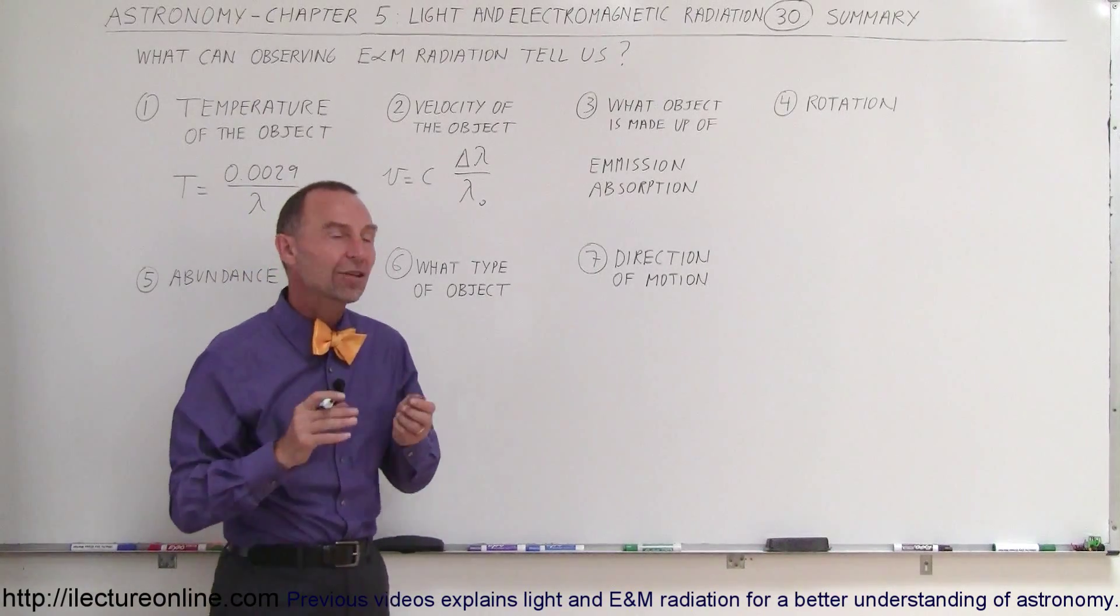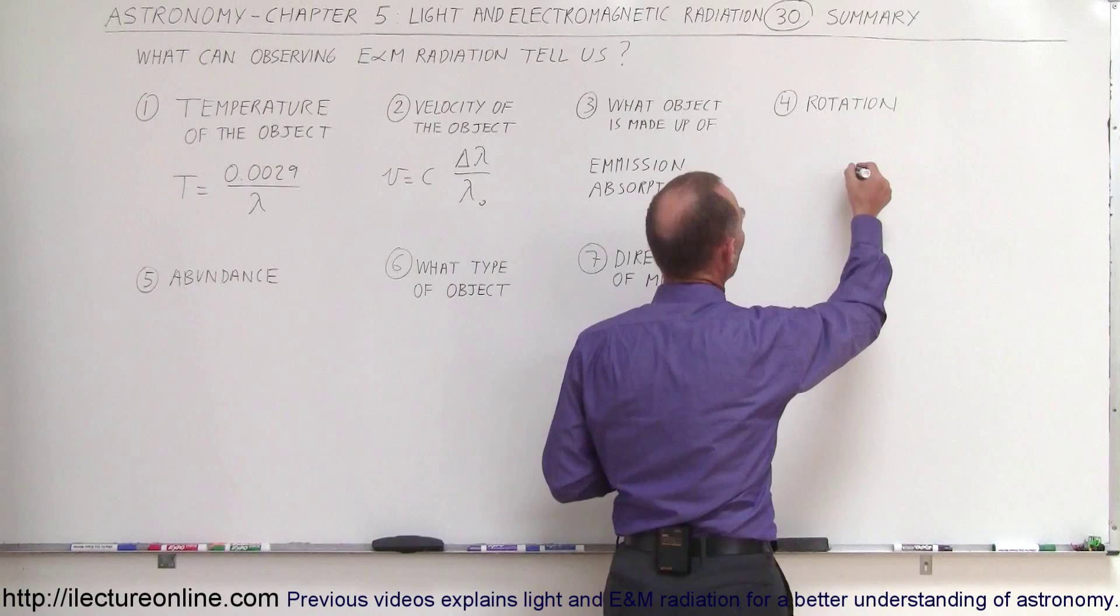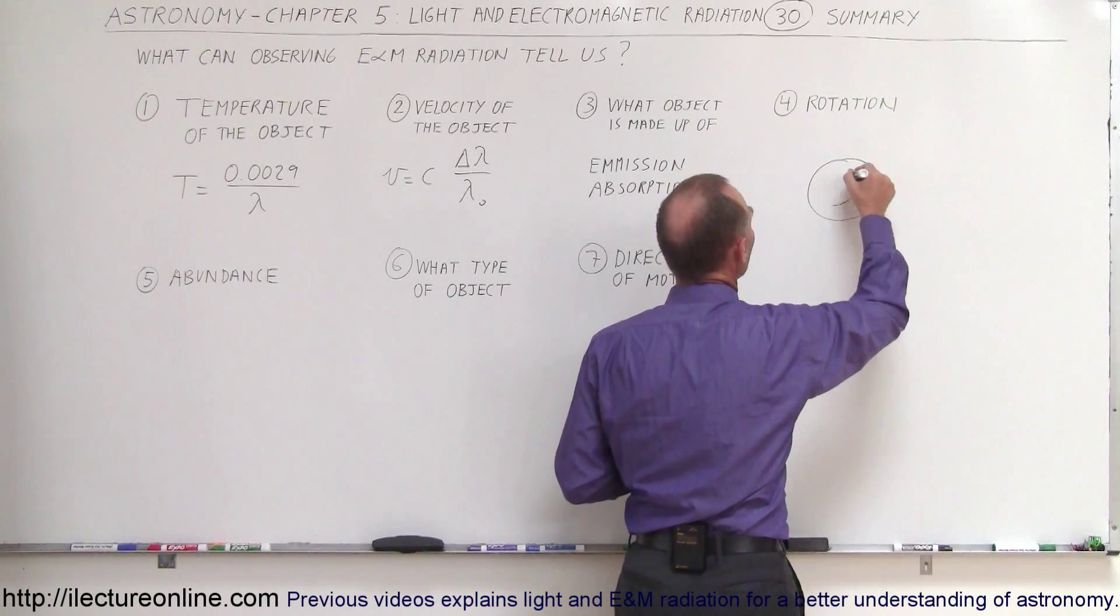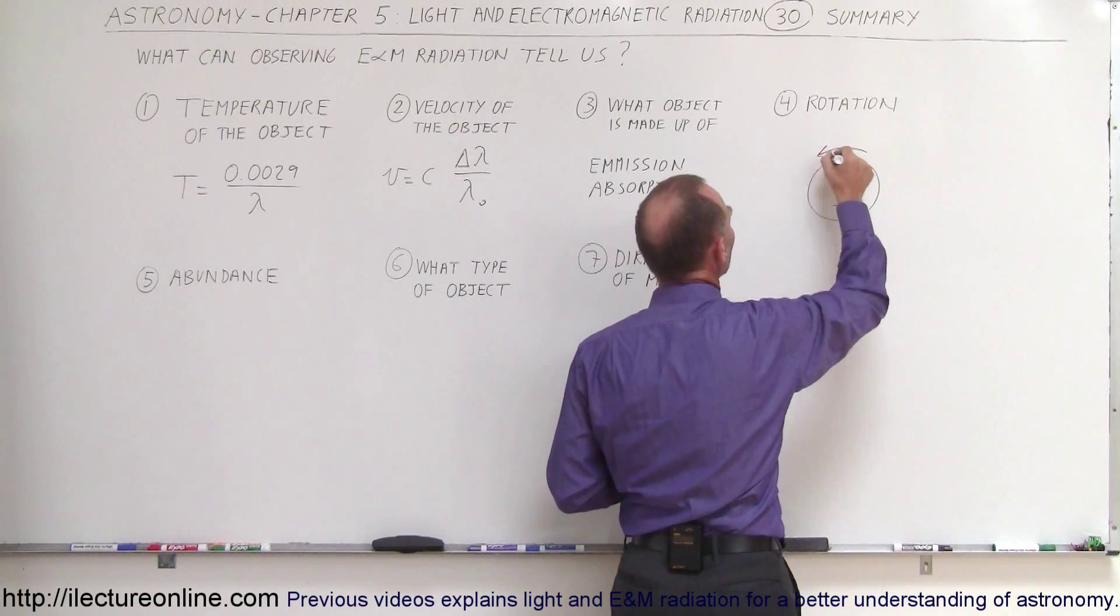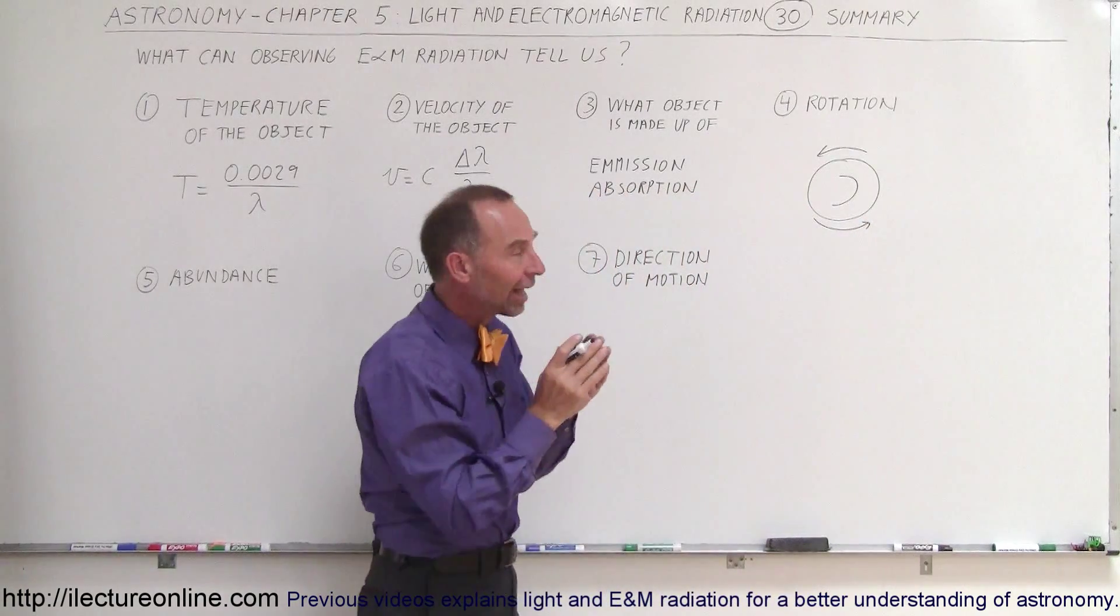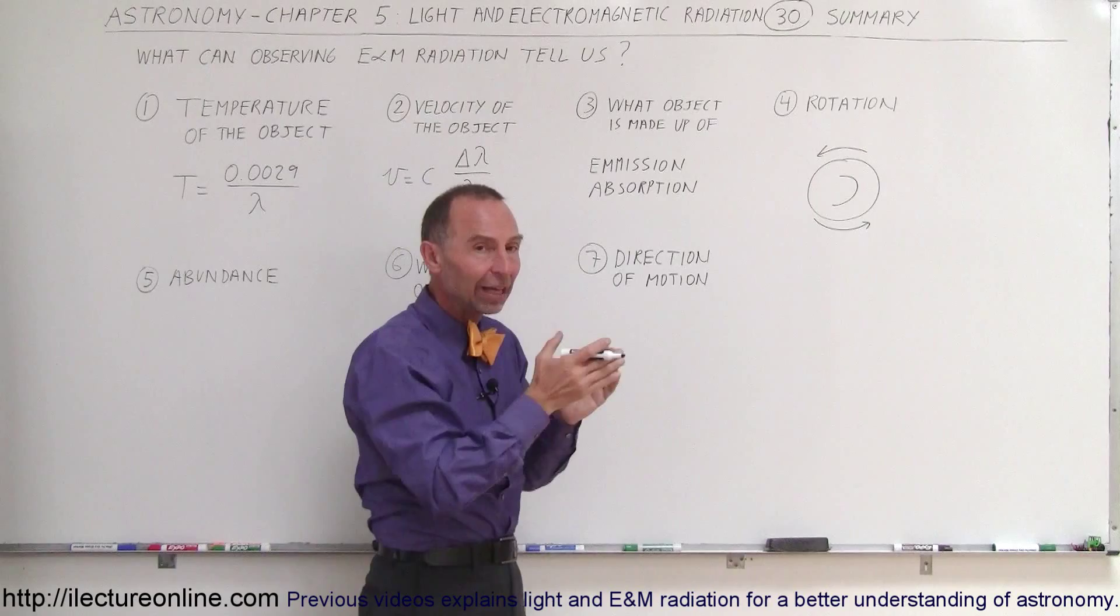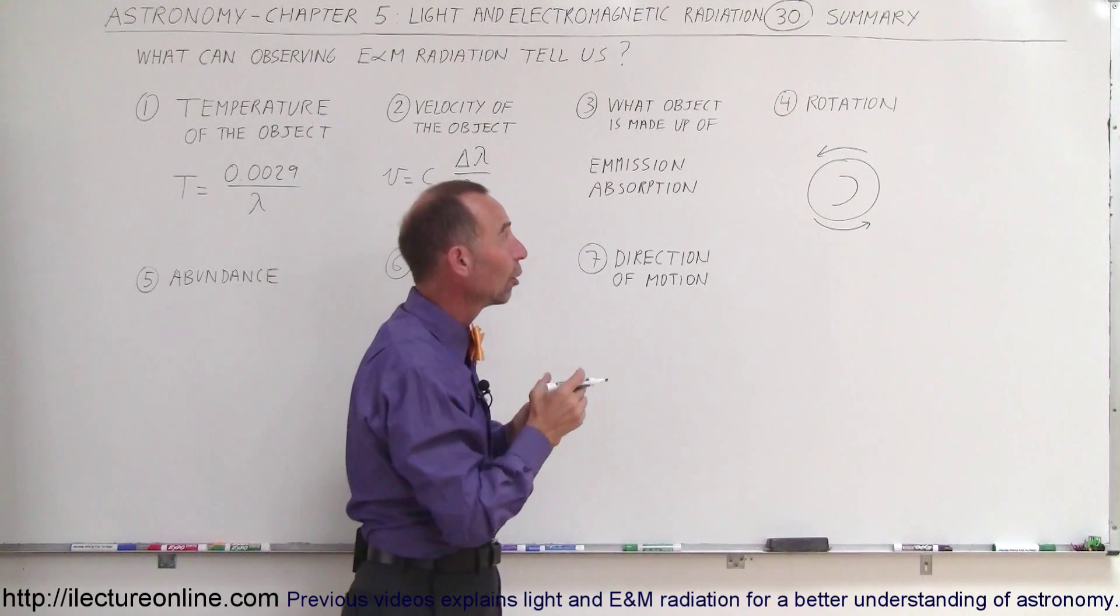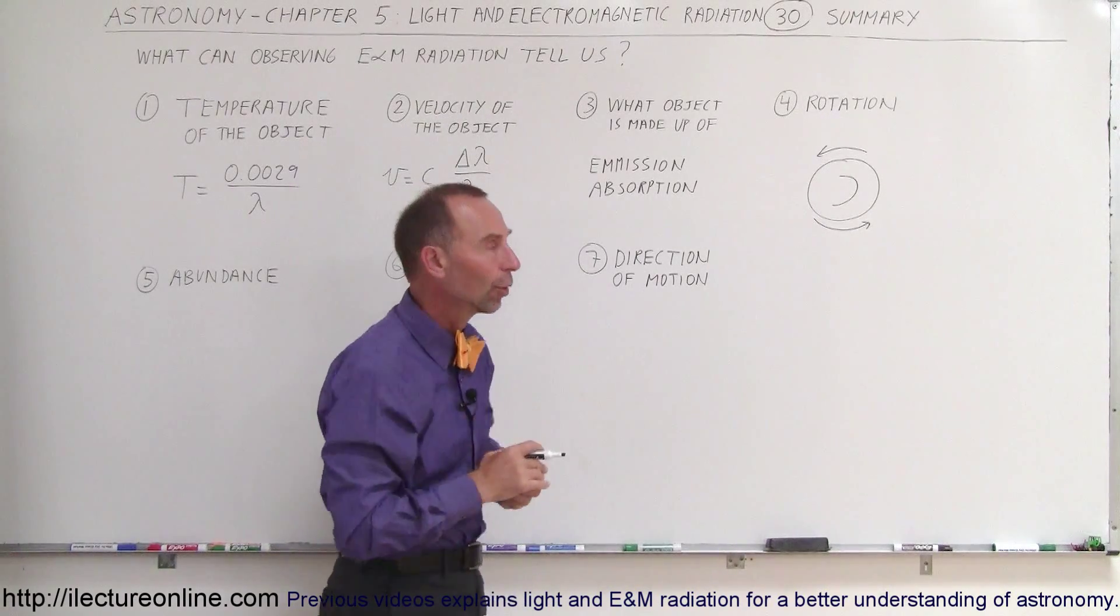We can also figure out the rotation of the object. We remember that when the object is rotating, part of the object is moving away from us, part of the object is moving towards us, and the amount of that spread in the wavelengths of the particular light coming from us will tell us how fast the object is rotating.